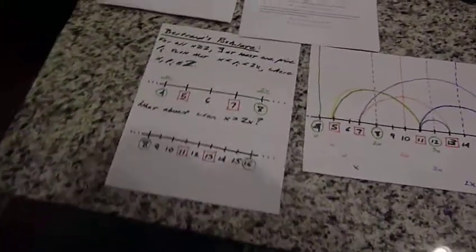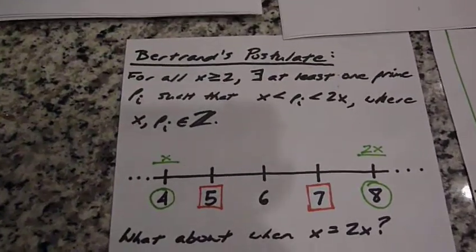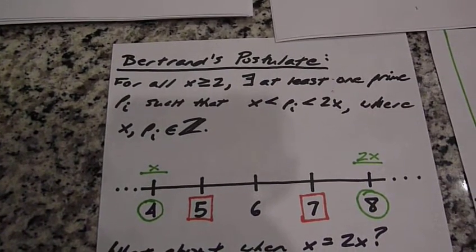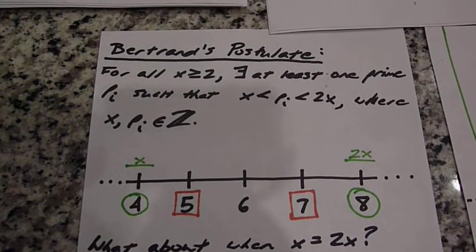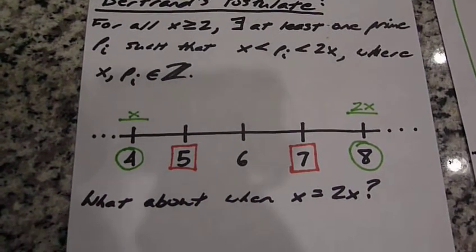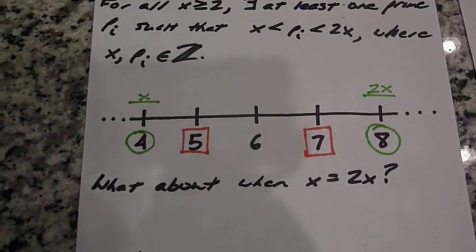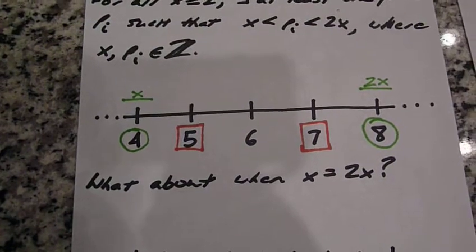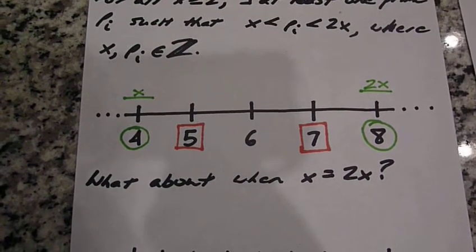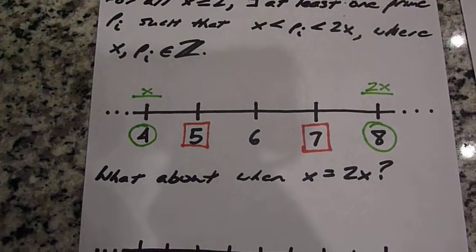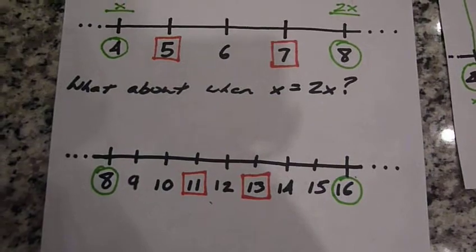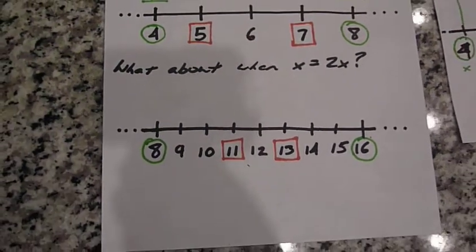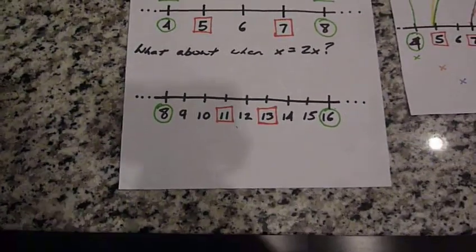Basically it's based on Bertrand's postulate, which states that for all x greater than or equal to one, there's at least one prime between x and 2x. This is just an example: when x equals 4, 2x equals 8, and we have 5 and 7 in between, so two primes between x and 2x. What about when x equals 2x, the next iteration of the Bertrand frame?